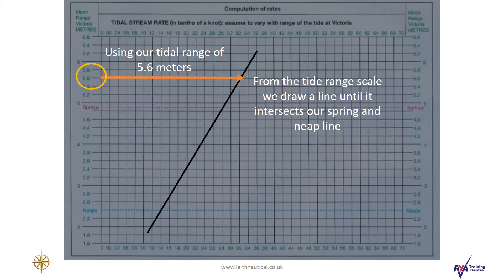Our next step is to mark off the tidal range that we have on the day. In this case it's 5.6 meters and we draw a line from the scale on the left hand side of the chart until it intersects with our spring and neap line that we have drawn.